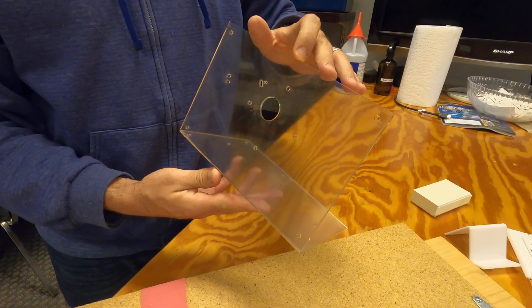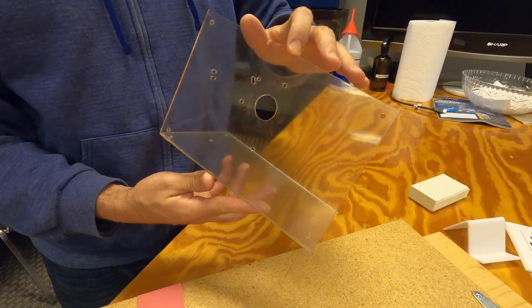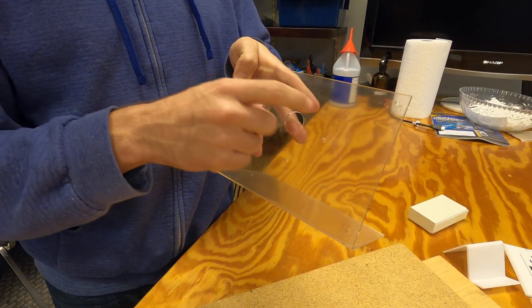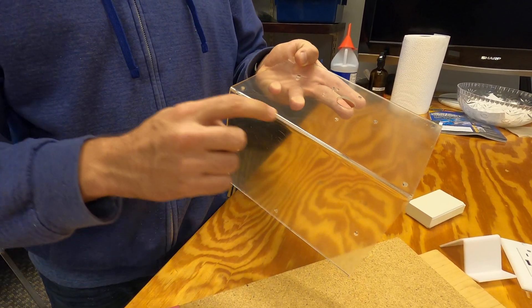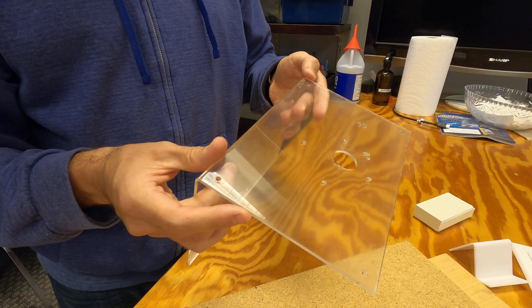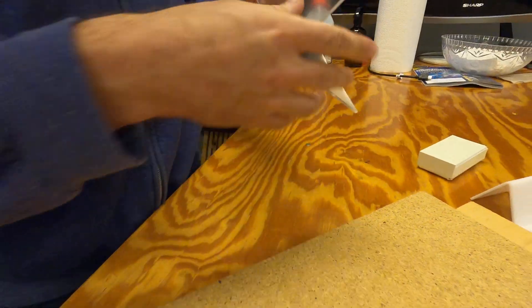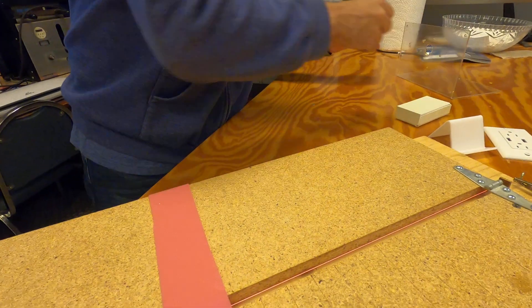Another member made this for, I believe, a NEMA 17 stepper motor. So the motor would go in here. You'd screw it in through there. They laser cut these. And of course, they made the bend on the acrylic bender. You might not be able to see it, but it looks like there was a little cracking there. And again, that's what I mentioned. It's what happens if you let it sit too long. Not the end of the world, but something you want to avoid if you can.